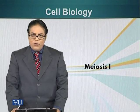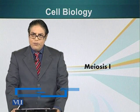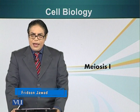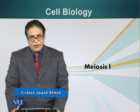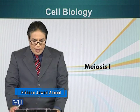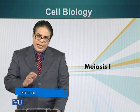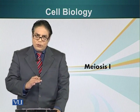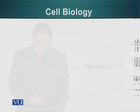In this module, we will talk about meiosis. Meiosis is a type of cell division in which one cell gives rise to four daughter cells. Those four daughter cells have half the number of chromosomes, or the genetic material, as a parent cell.